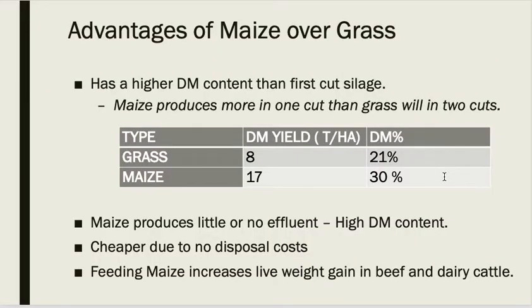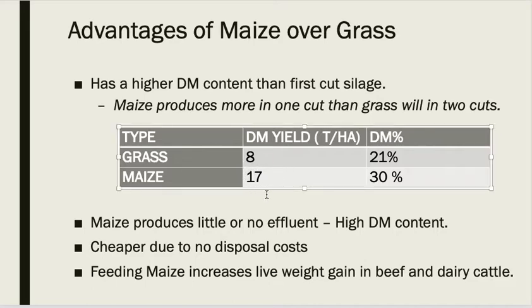Why do we use so much maize for silage? It has a much higher dry matter content than grass silage, even first-cut grass silage. In fact, one cut of maize silage will yield more than two cuts of grass. From the table you can see the dry matter yield for grass is 8 tons per hectare, whereas maize can get 17 tons per hectare. For percentage dry matter, grass is at 21% for a first cut, while maize can reach up to 30%.